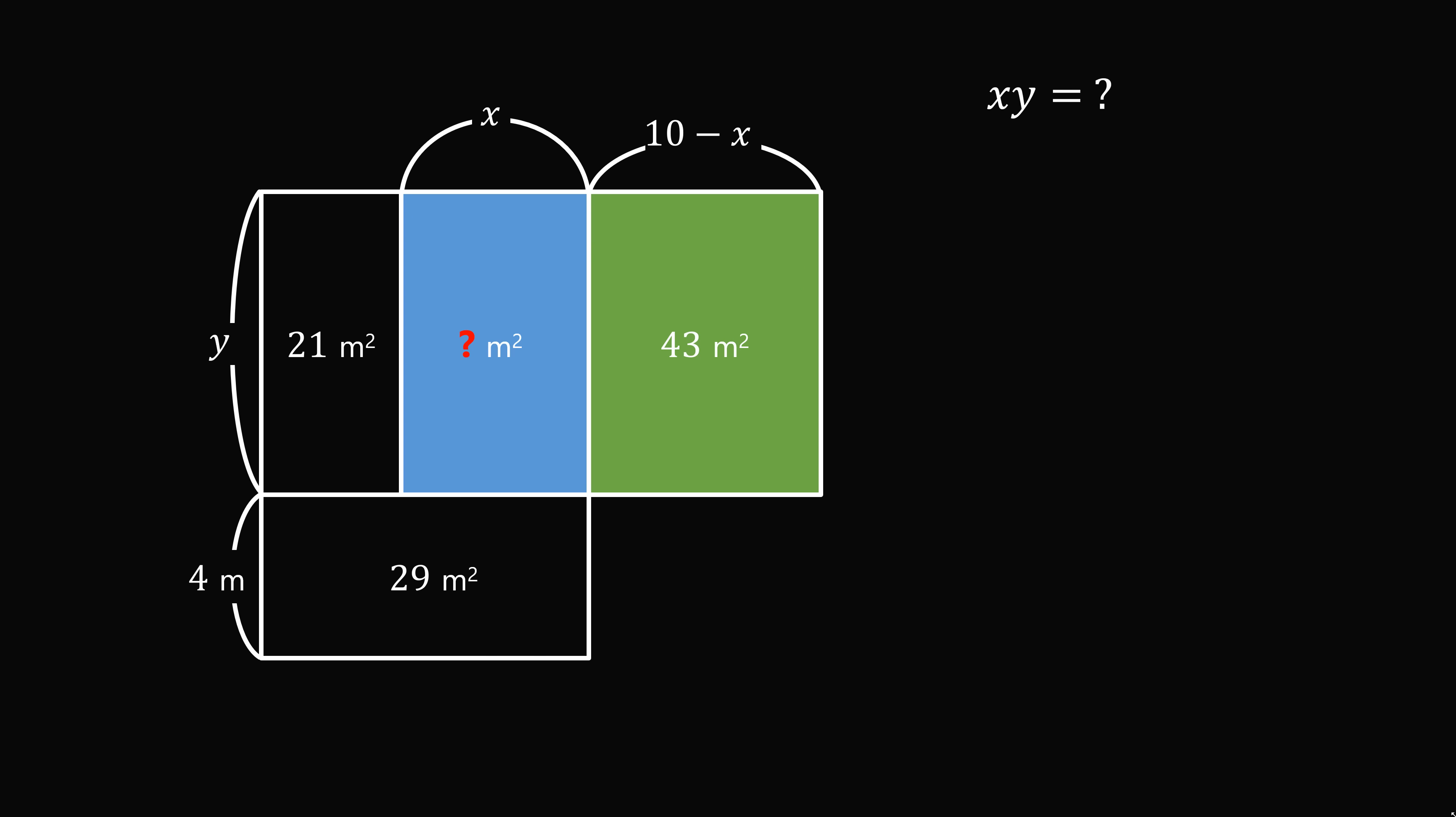Now focus on the third rectangle. Its area is equal to 43 meters squared, and we know its width and height. So we have 10 minus x multiplied by y is equal to 43. We can distribute to get 10y minus xy is equal to 43.